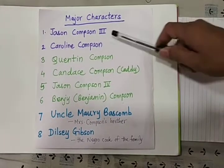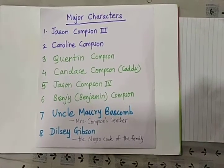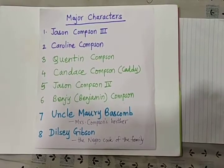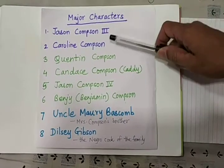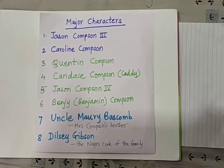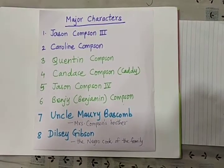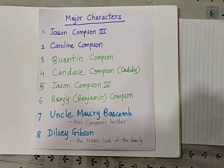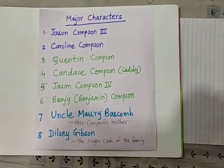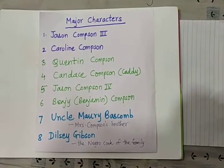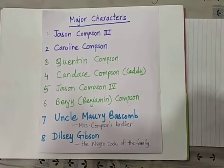Jason Compson III is the cynical and detached father. His wife Caroline Compson is the selfish, neurotic mother of the children. Jason Compson and Caroline Compson have four children. Quentin Compson is the oldest and over-sensitive son, who commits suicide on June 2, 1910. Then Cadence Compson, also called Caddy in the novel.